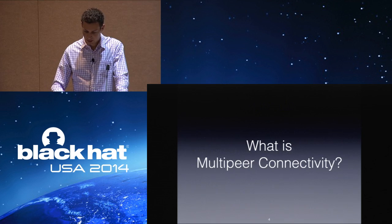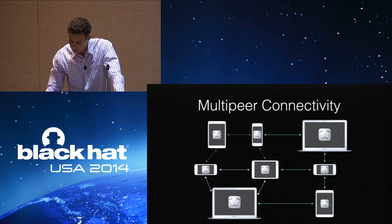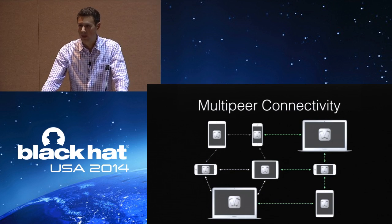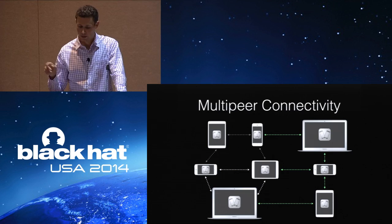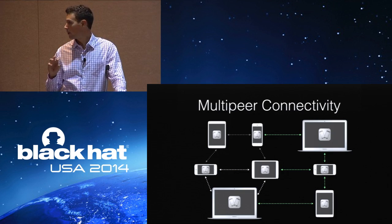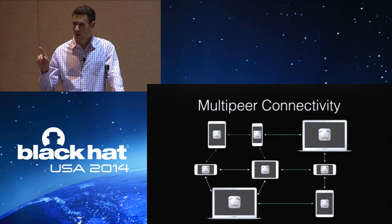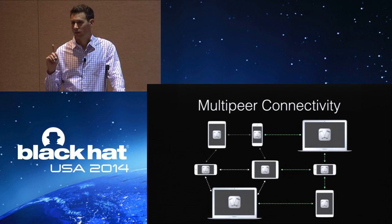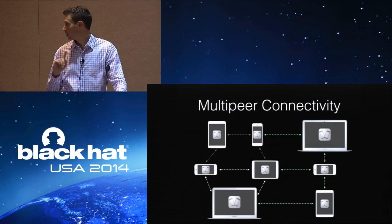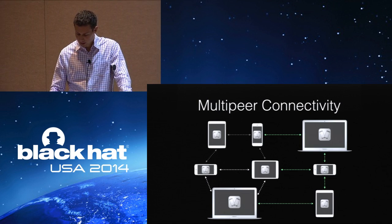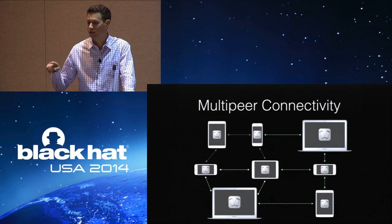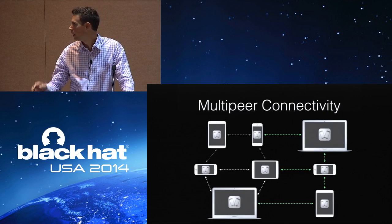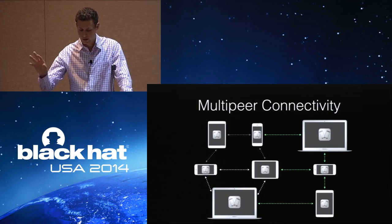So multi-peer connectivity was introduced in iOS 7. It's a new Apple library that you can use as a developer. What it does is let you write an app that can find the same app running on nearby devices, so you can find nearby devices and then start communicating with them and exchange data. What's kind of interesting is it was also introduced in Mac OS Yosemite, which will be released in a month.